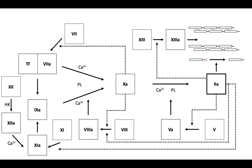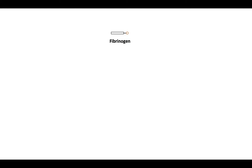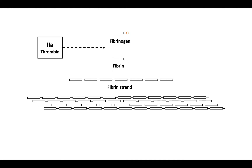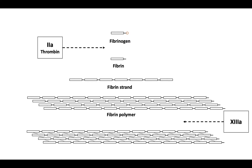From our previous video, you may recall the coagulation cascade, the process by which we generate thrombin to form a strong fibrin clot. The process ends with fibrinogen, which through the action of thrombin gets cleaved to fibrin. Fibrin monomers combine to form a fibrin strand, fibrin strands combine to form a fibrin polymer, and fibrin polymers are acted upon by activated factor XIII, which leads to cross-linked fibrin.